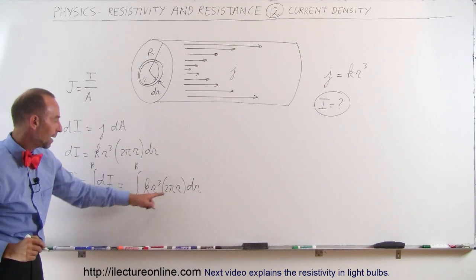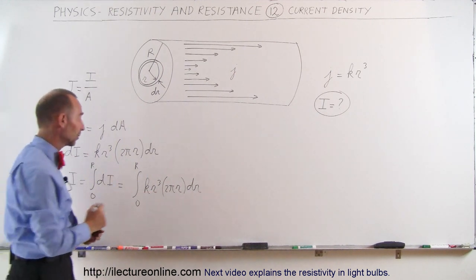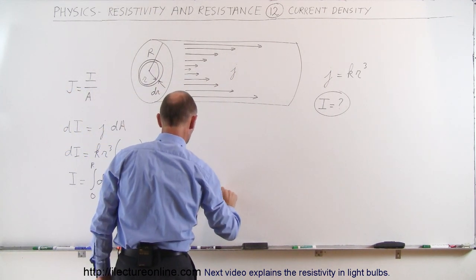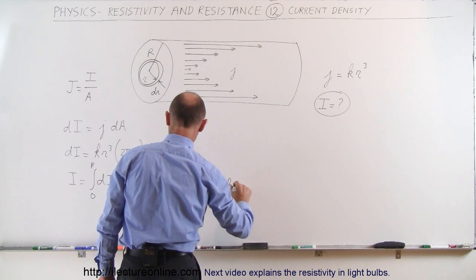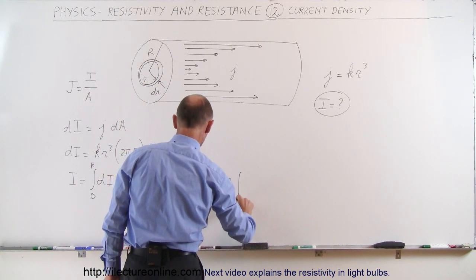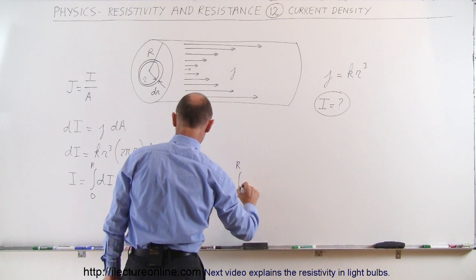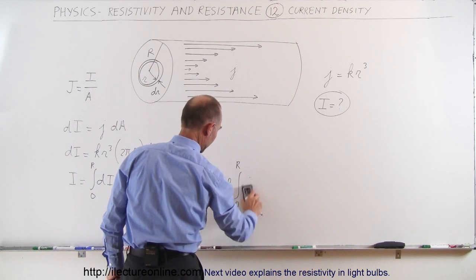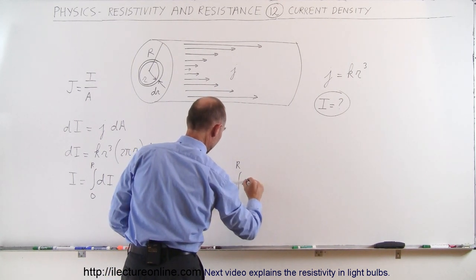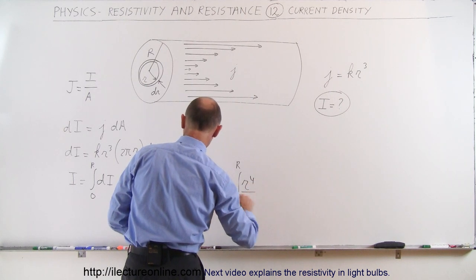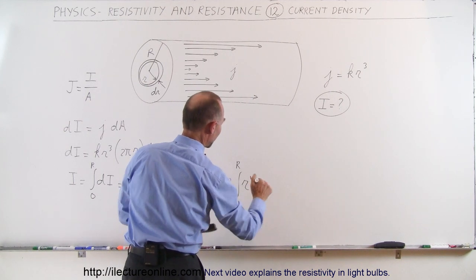Now notice that two pi and K are all constant, they can come outside the integral sign, so this is equal to two pi K times the integral from zero to big R of R to the fourth. Oh, that's a terrible looking R, let me try that again. R to the fourth times DR.